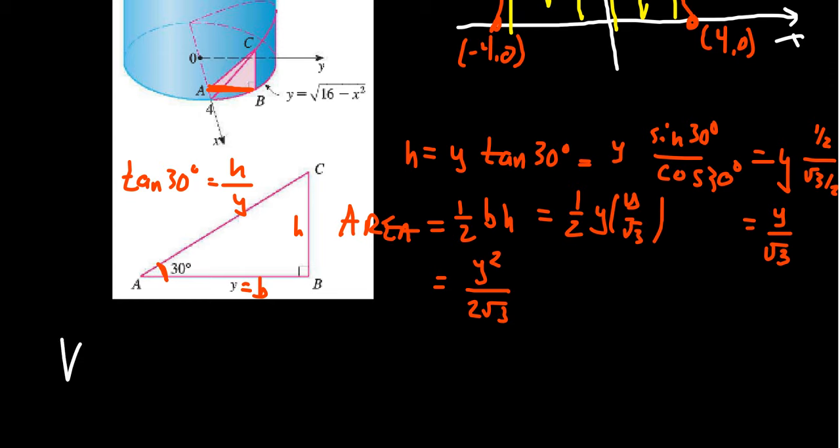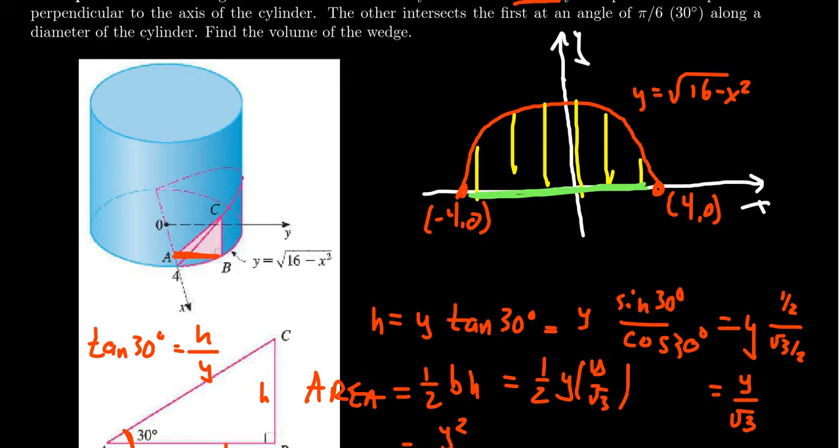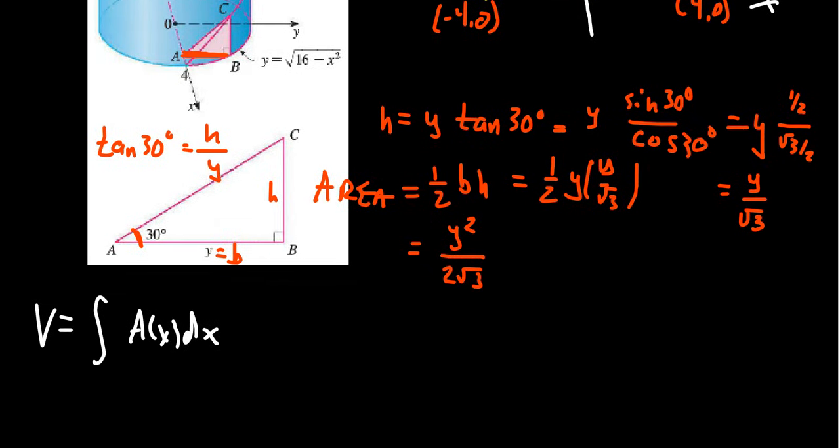If we set up our integral, the volume of this wedge is going to be the integral of an area function A of X dx. And let's try to identify what the bounds of integration would be. If we come back up here, our X values is allowed to range anywhere in this spectrum right here from negative 4 to 4. So those are going to be the bounds of integration. We end up with X is negative 4 to 4. Well, notice that's again a symmetric interval. It feels very likely that we're going to be able to use symmetry to simplify the integral here. We'll get back to that in just a moment.